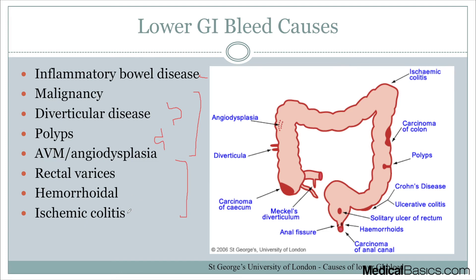These are going to be very common causes and common things that we'll think about in terms of lower GI bleeds. This is how I like to think about upper versus lower GI bleeds in general — break it down into three different categories once we've broken it down into upper versus lower: inflammatory disease, structural disease, and vascular disease.